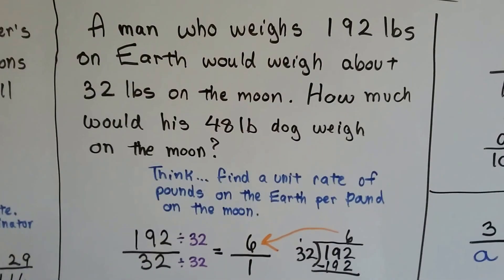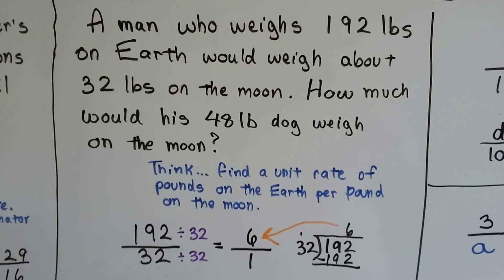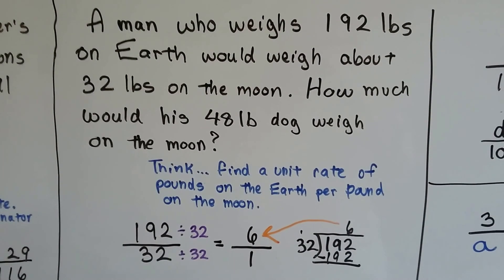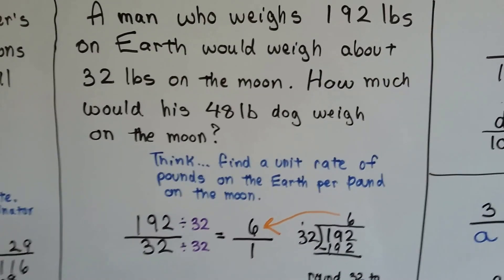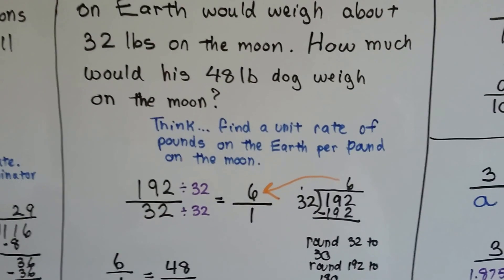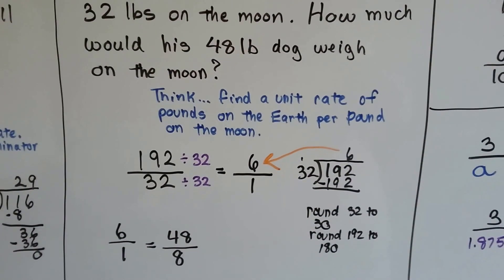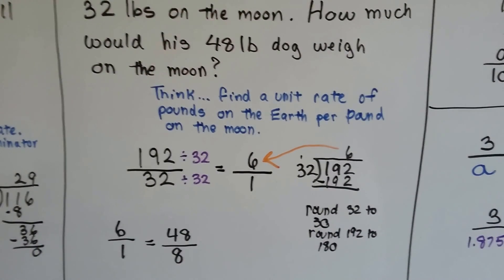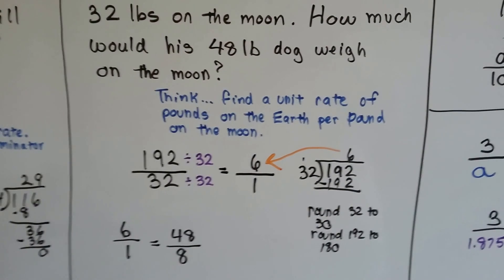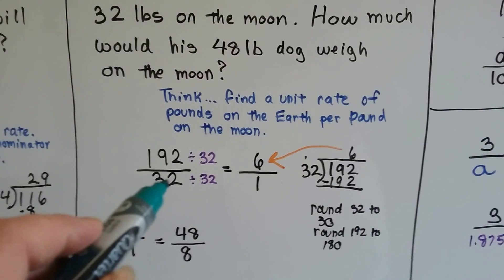A man who weighs 192 pounds on Earth would weigh about 32 pounds on the Moon. So how much would his 48 pound dog weigh on the Moon? We need to find a unit rate of pounds on the Earth per pound on the Moon. The 192 over 32 gets divided by the denominator.